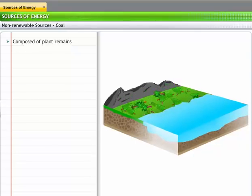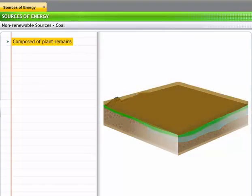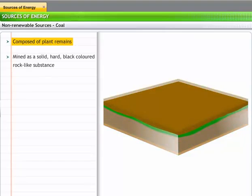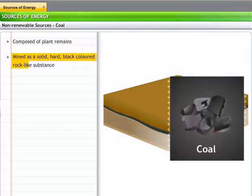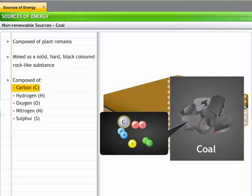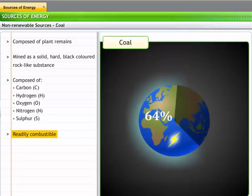Coal is obtained from plant remains that have not been oxidized and biodegraded over time. It is mined as a solid and is a hard, black-colored, rock-like substance composed of carbon, hydrogen, oxygen, nitrogen and sulfur. Coal is used as a major source of energy since it is readily combustible and possesses a high calorific value. Coal is used to produce around 64% of the world's electricity.